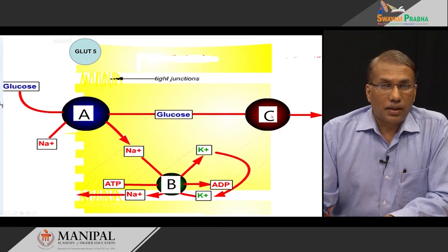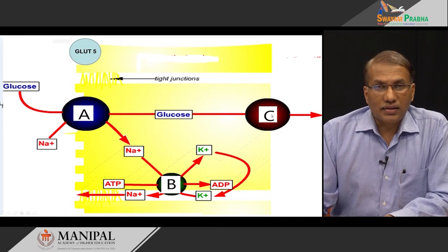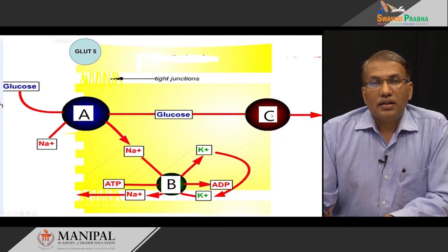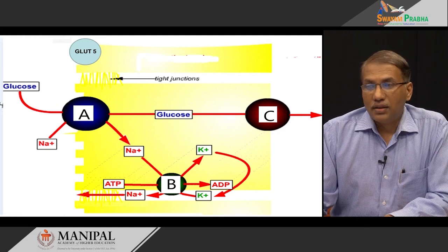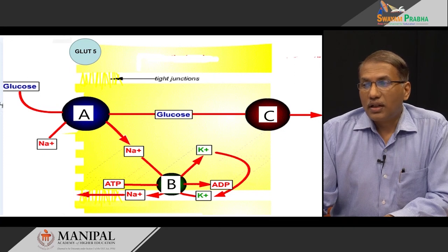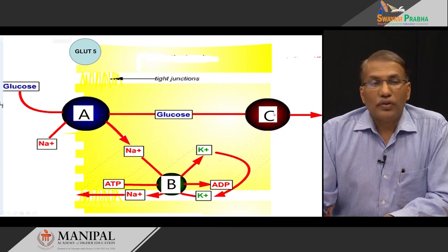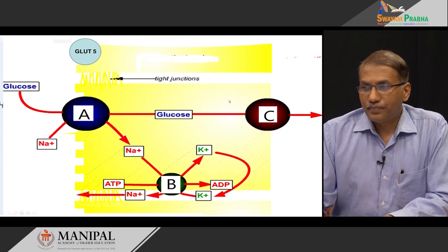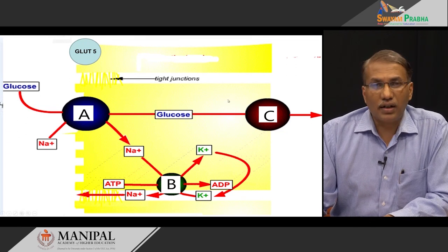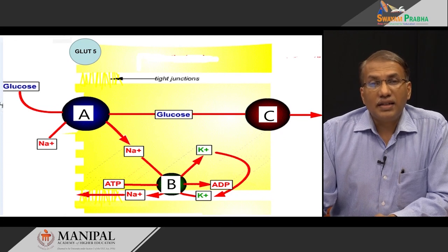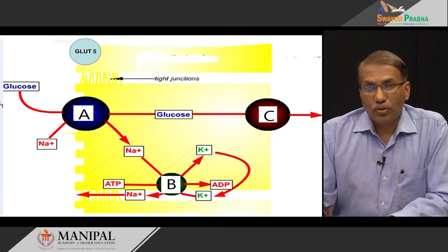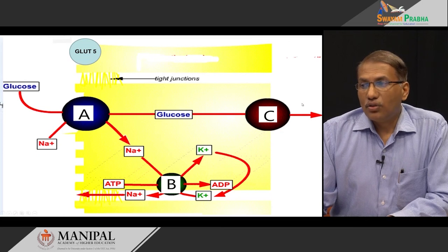Moreover, this transport system also has a very high KM for glucose, meaning very low affinity. That means it requires a really good concentration of glucose before it can open up. Both of these points will safeguard against the rapid influx of glucose from the intestinal cell into the blood.